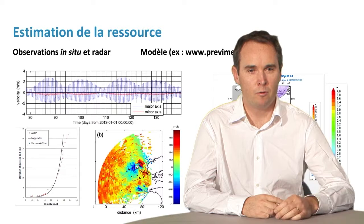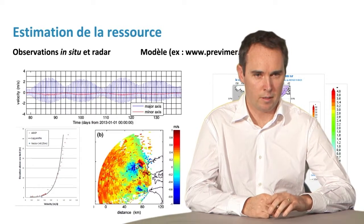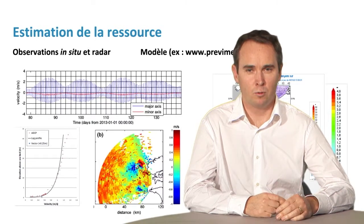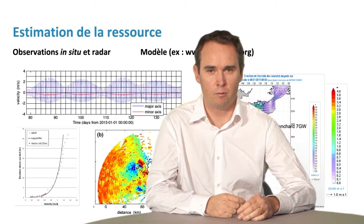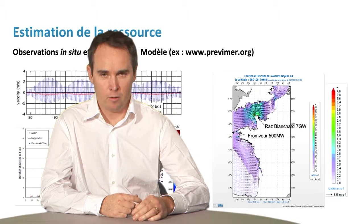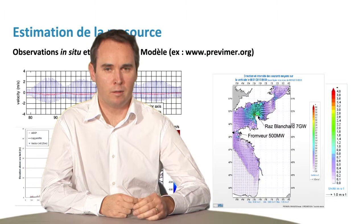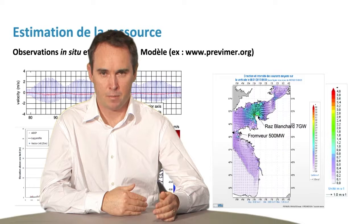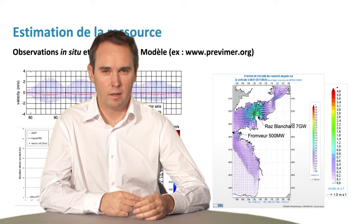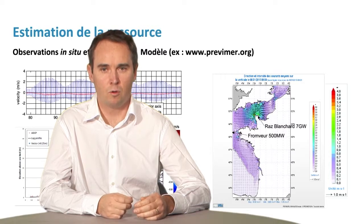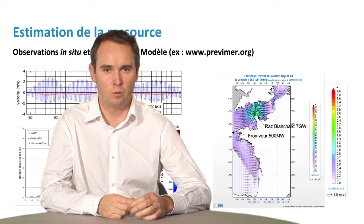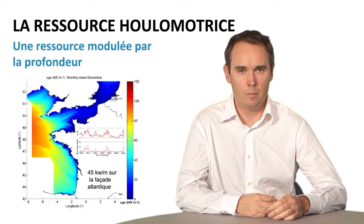On the left-hand side, we see the current evolving depending on the sea bottom configuration, with a similar evolution to wind because the current rubs against the sea bottom. On the right-hand side, a digital model predicts the evolution of the tidal current along the French coast. The current is encouraged by a very specific coast shape and bathymetry configuration. These parameters come together in two places in France: one where the resource reaches seven gigawatts, and in Brittany between the islands where we have an even greater resource.